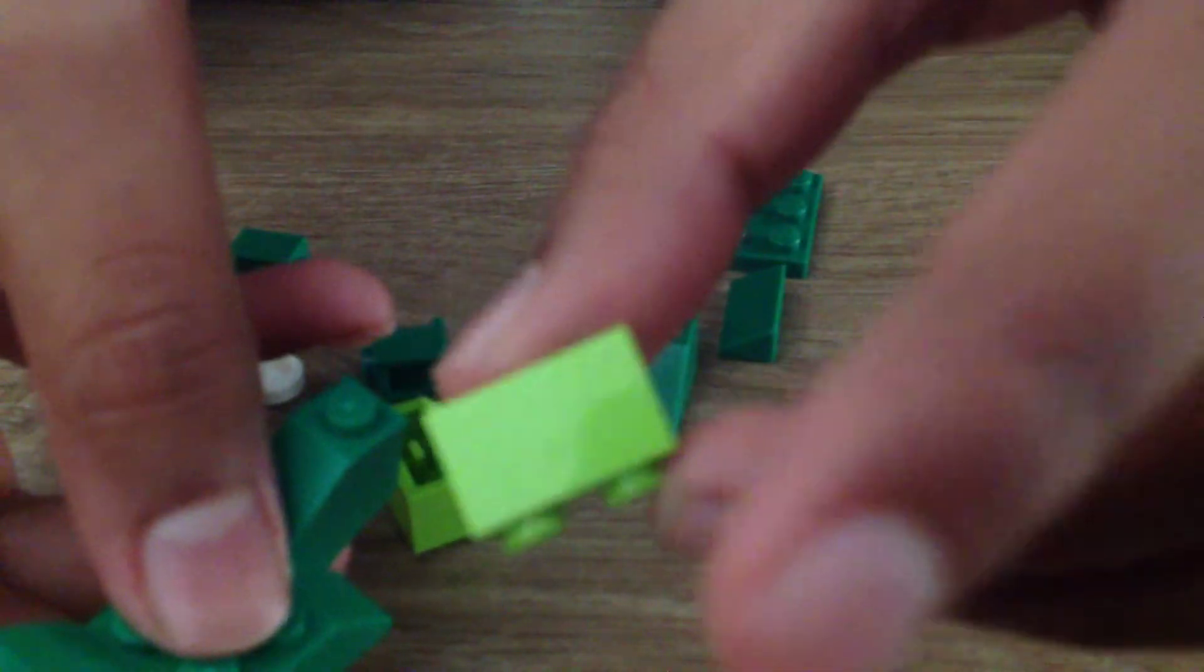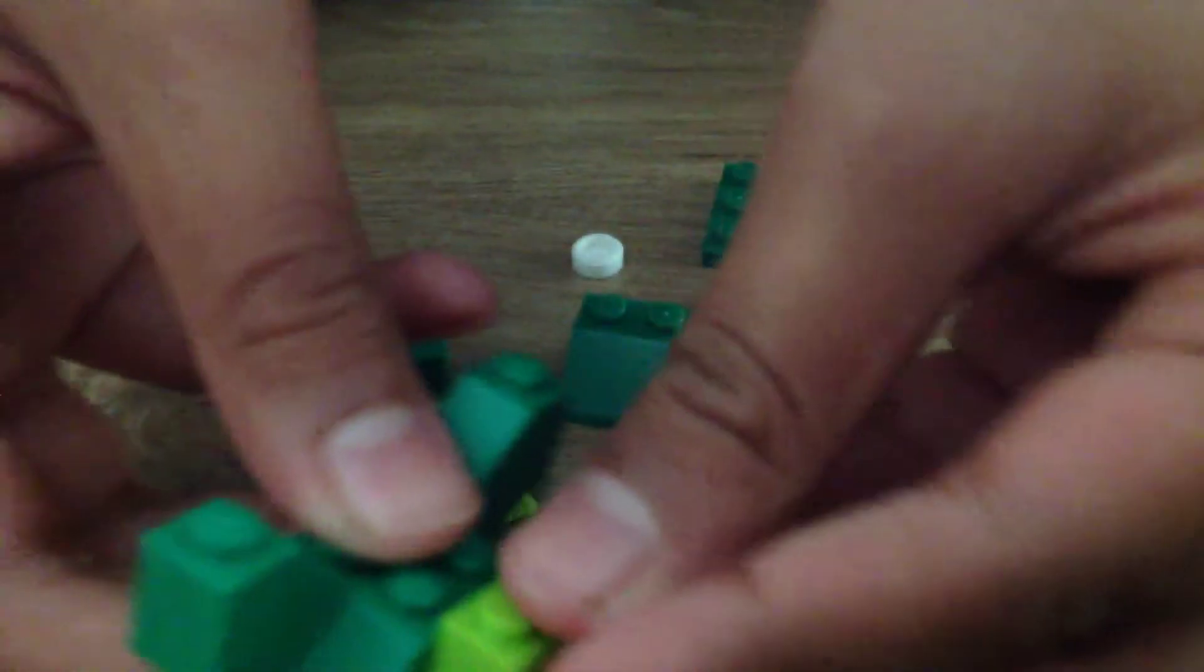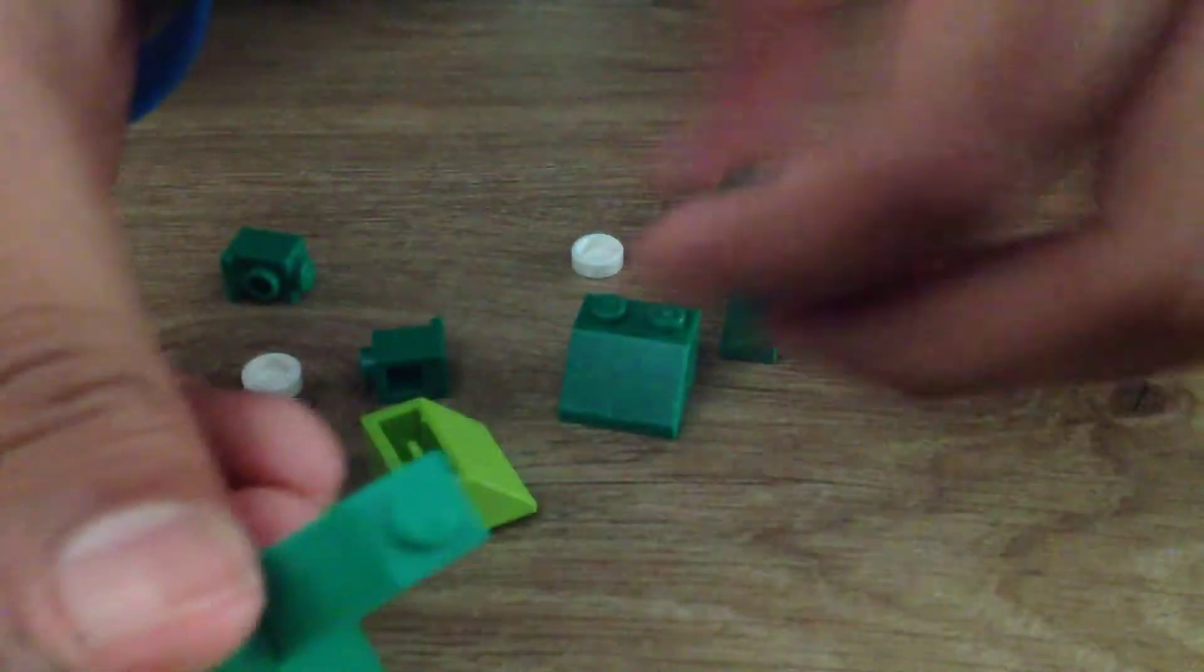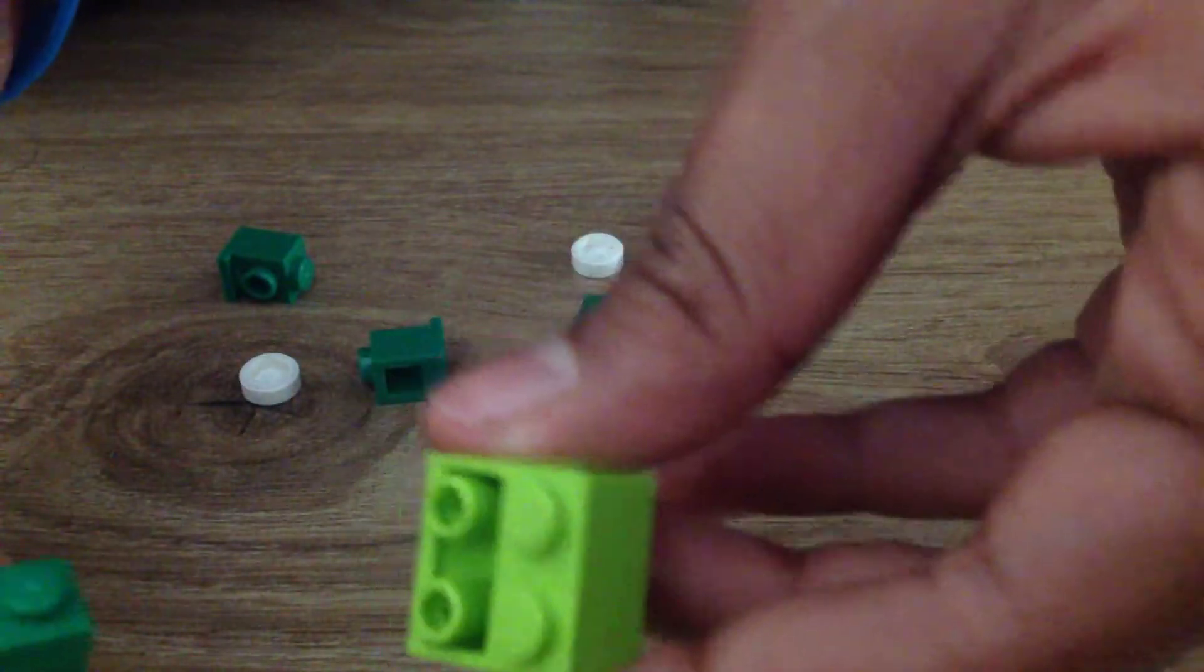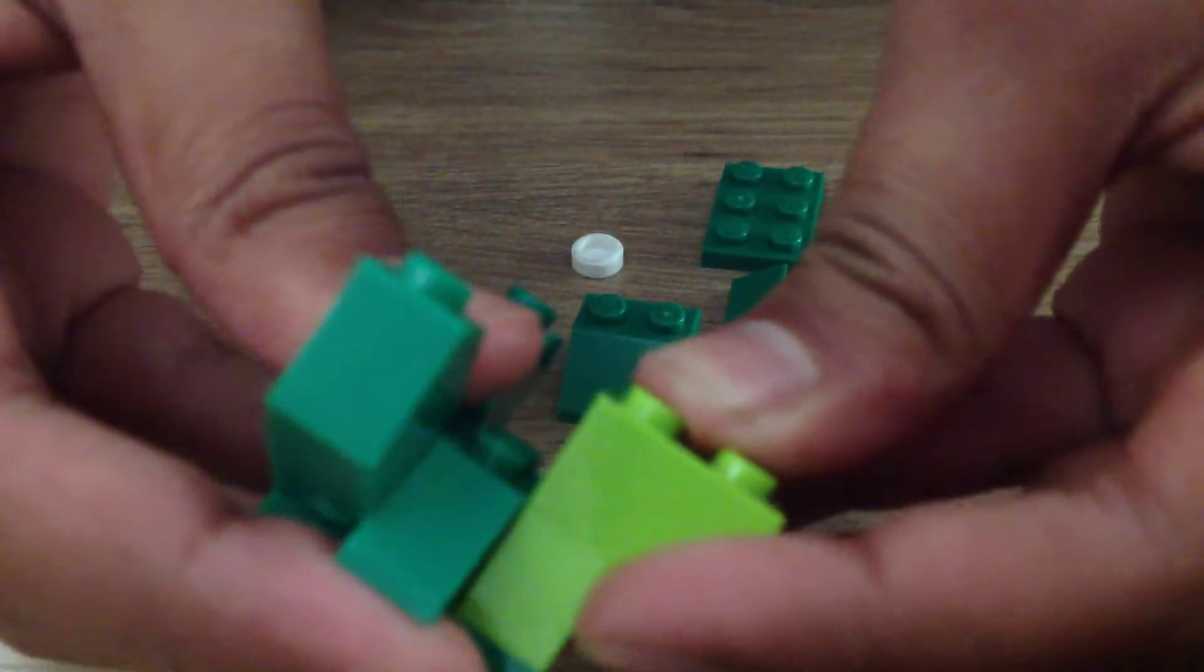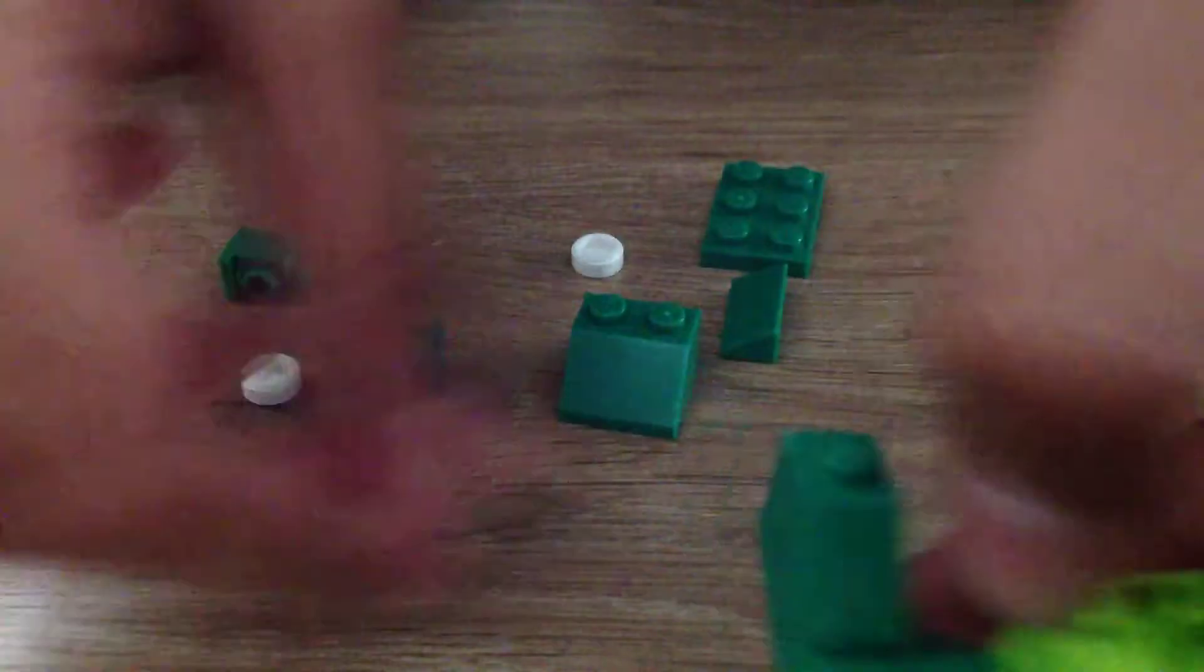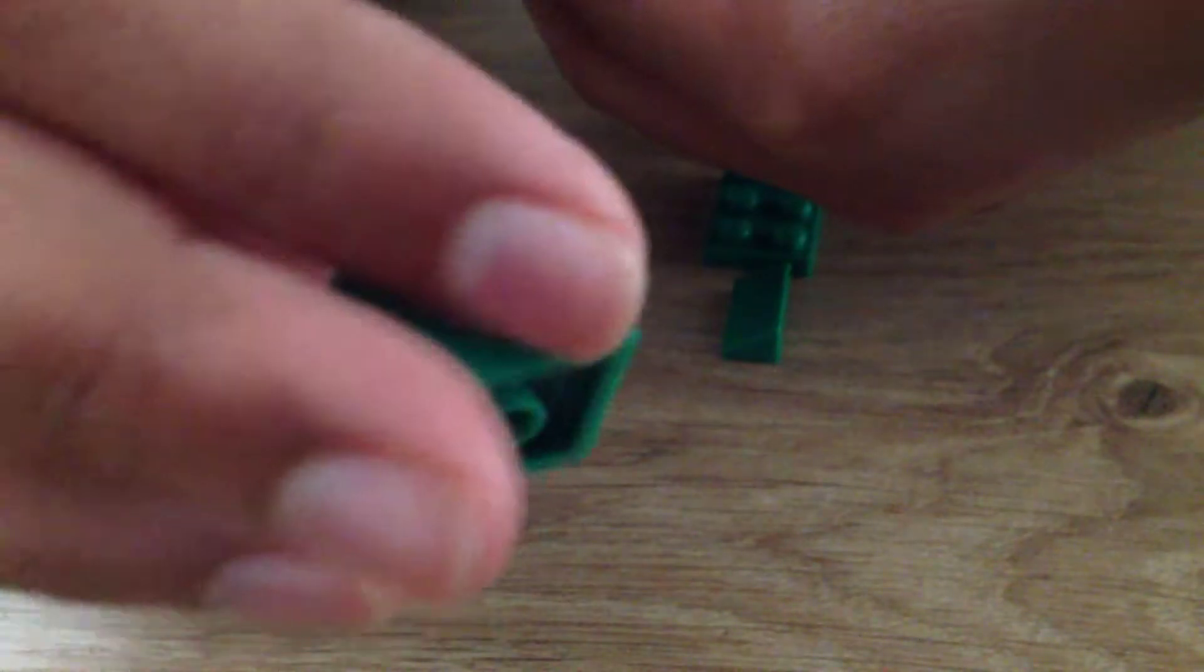You're going to need a light green piece like this and put it over here, and then another light green piece but different. Take this and put it over here. Then you're going to need a dark green piece like this and put it on.